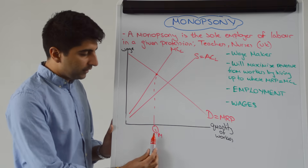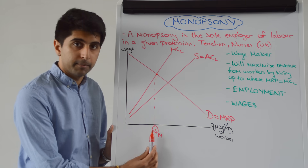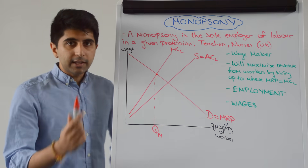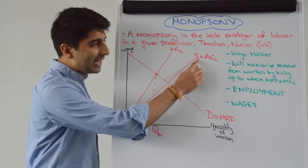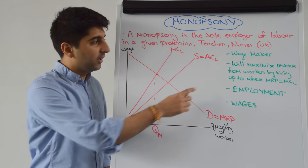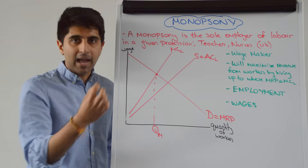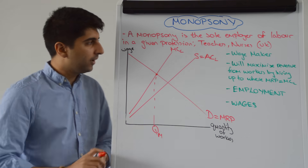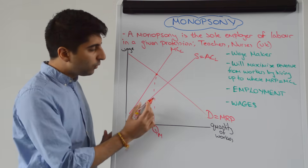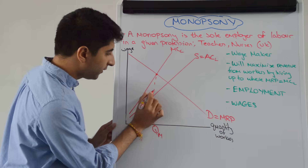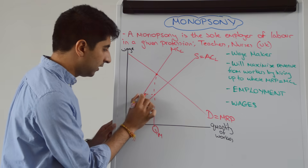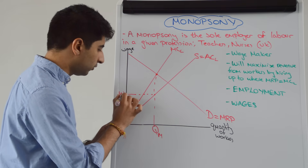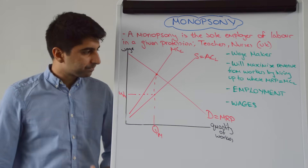That gives us the quantity of workers employed by the monopsonist, where MRP equals the marginal cost of labour. Where do we get the wage from? The wage is read off the supply curve — the average cost of labour — at this quantity, giving us the monopsonist wage of WM.